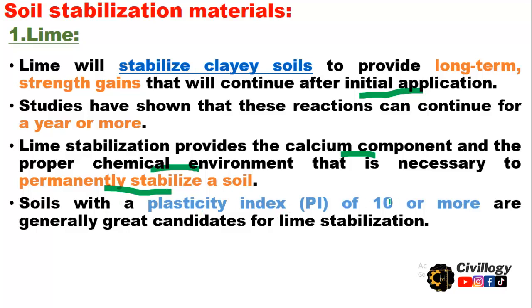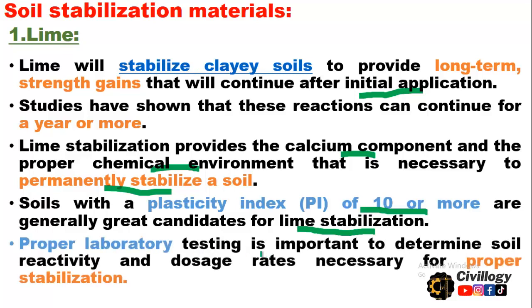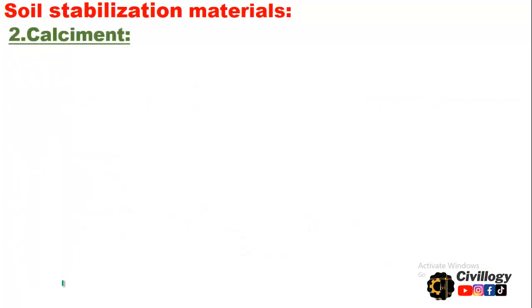Soils with a plasticity index of 10 or more are generally great candidates for lime stabilization. Materials with lower plasticity are not suitable for lime stabilization. Proper laboratory testing is important to determine soil reactivity and dosage rates necessary for proper stabilization. The second material for soil stabilization is calciment.